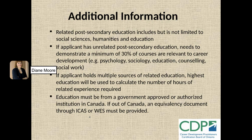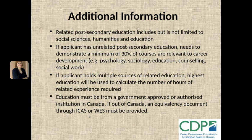Here are some additional important points for selecting your pathway. Post-secondary education in a related field includes, but is not limited to, social sciences, humanities, and education. An applicant with an unrelated degree would need to demonstrate that six to ten courses completed are relevant to career development — for example, psychology, sociology, education, counseling, and social work. If an applicant holds multiple sources of related education, the highest educational credential will be used to calculate the required hours of related experience. Education must be from a government-approved or authorized institution in Canada. If education was completed outside of Canada, an equivalency document through ICAS or WES must be provided. If you are uncertain whether your credential is related or unrelated, please contact us.